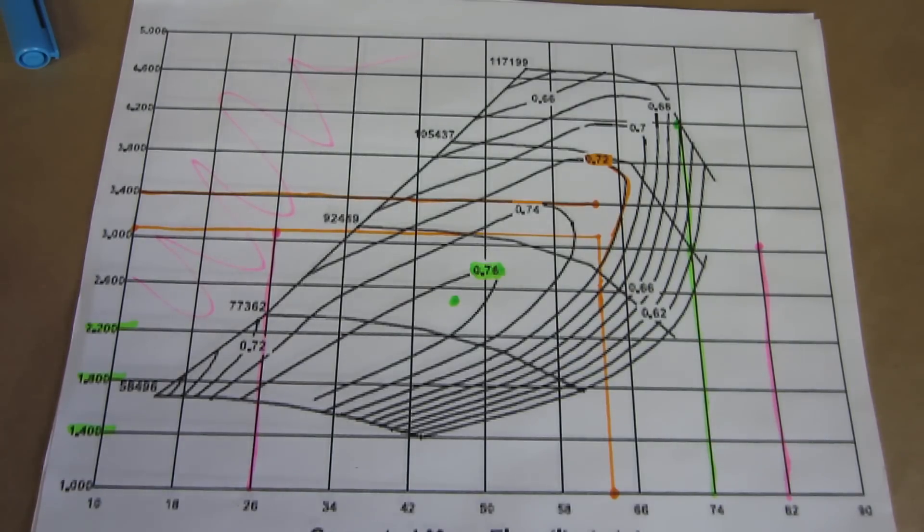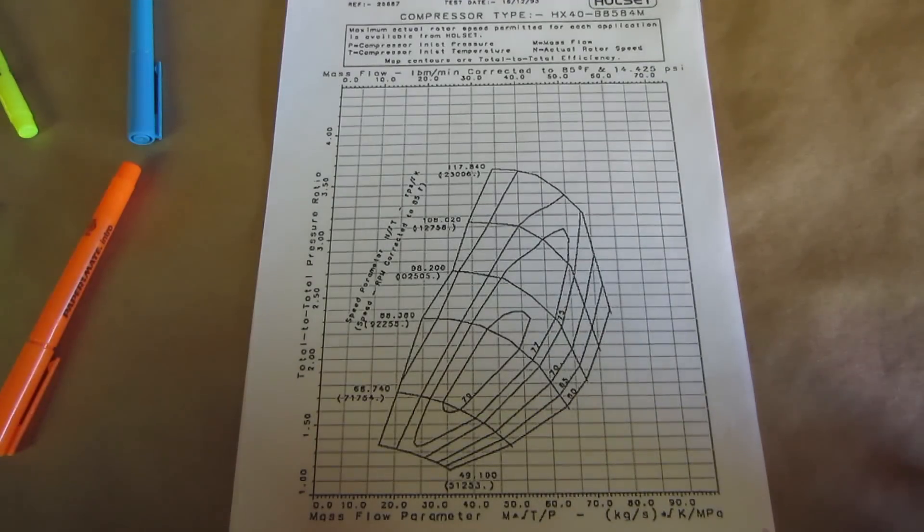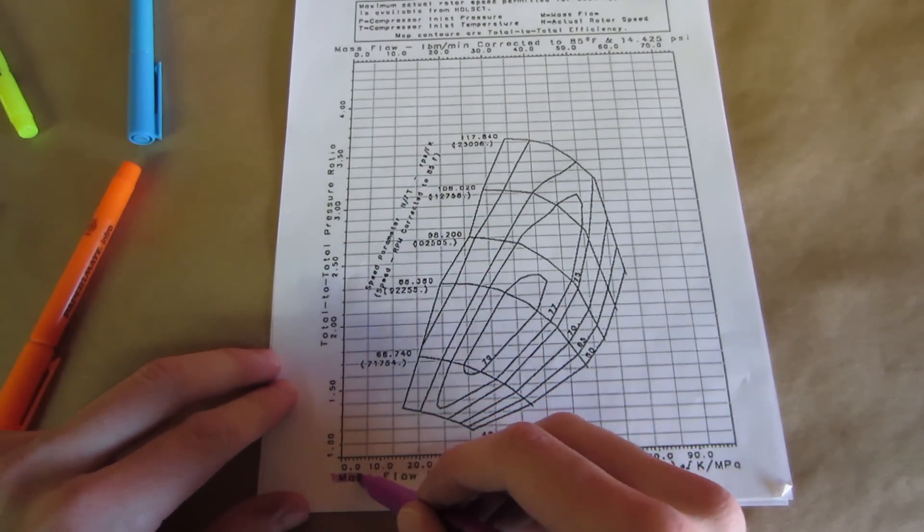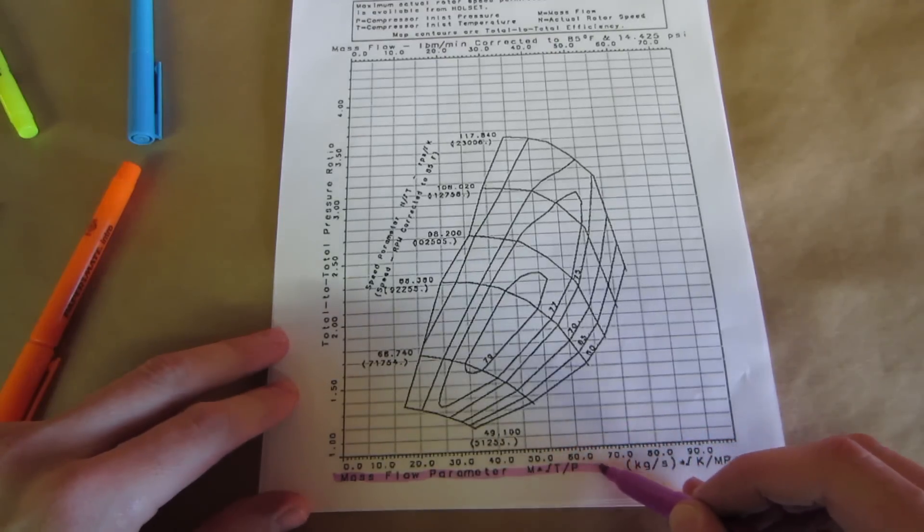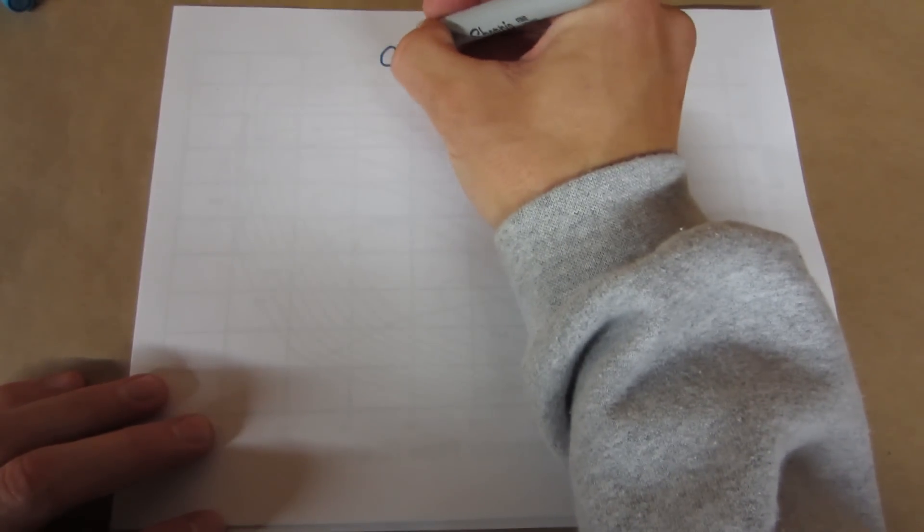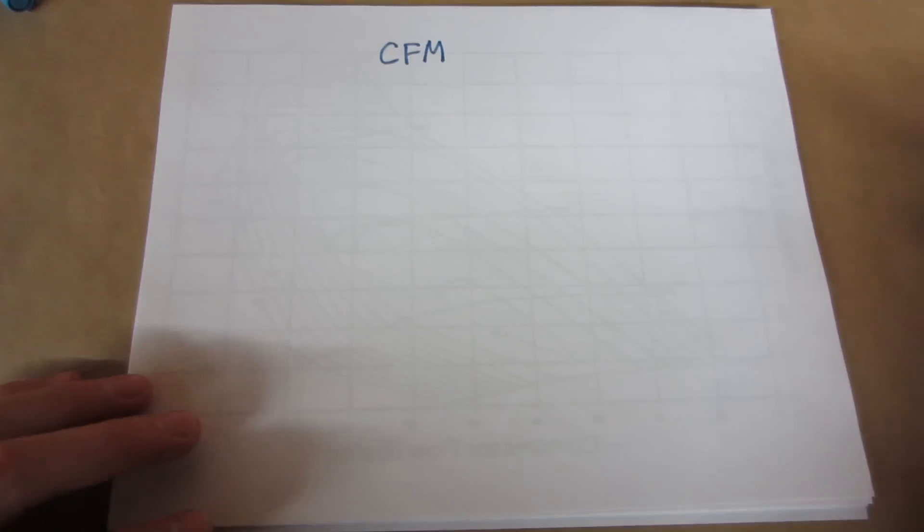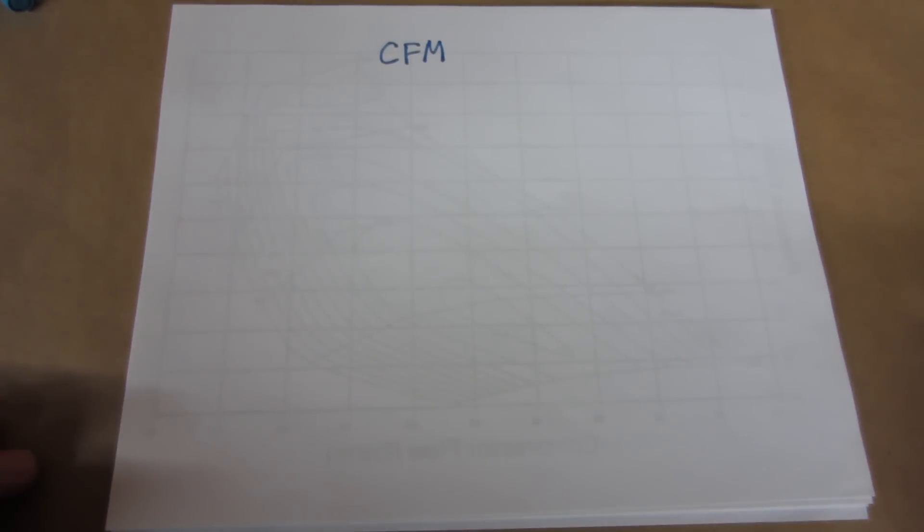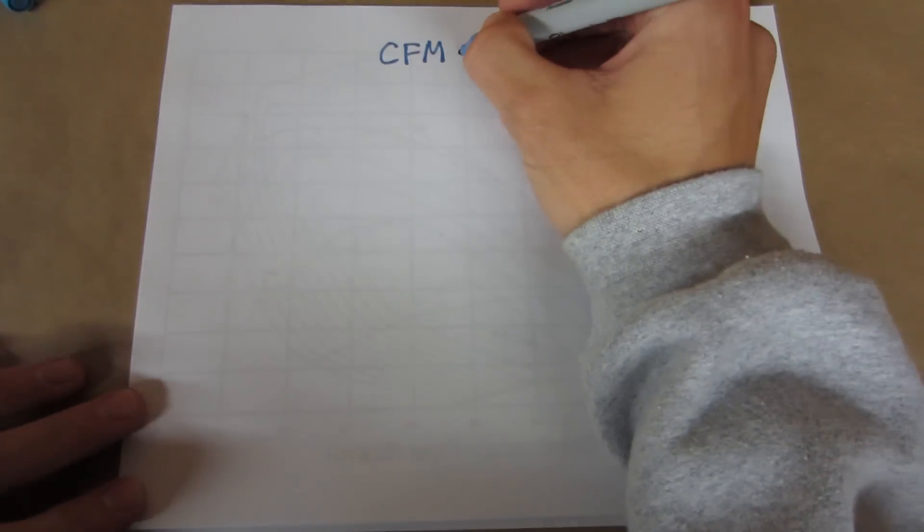Every compressor map is essentially read the same. Some may label the axes different or put flow on the y-axis and pressure ratio on the x-axis. One example is how Holset labels their maps. If we move to the Holset compressor map you will see the words mass flow parameter across the bottom. This is followed by a formula but pounds per minute is across the top.